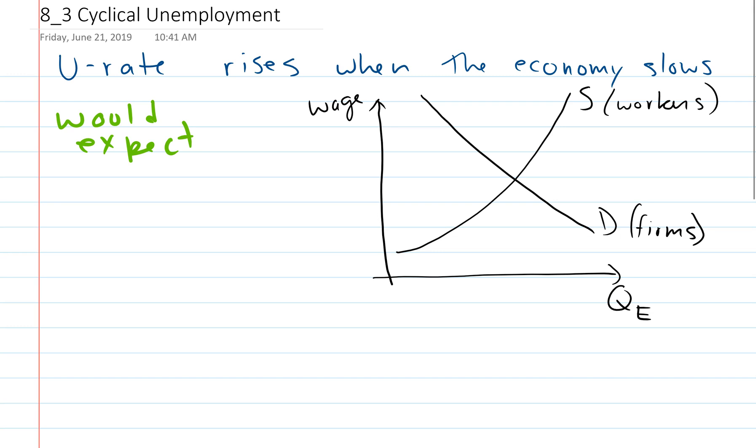And we've got an equilibrium. So let's label our equilibrium. Before our recession, this is our wage, and this is the number of people who are employed. Maybe I'll just call this E so we can keep consistent. So this is the number employed.